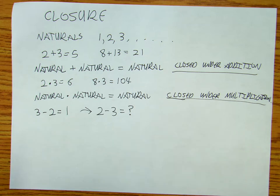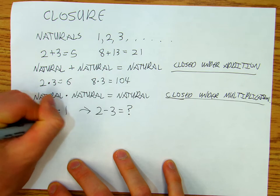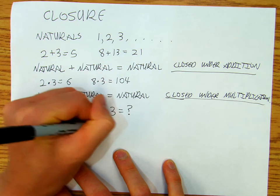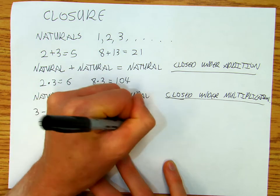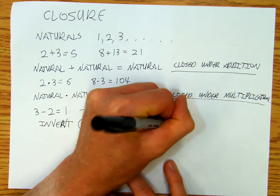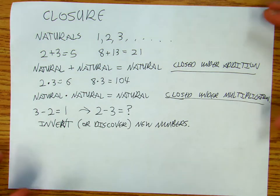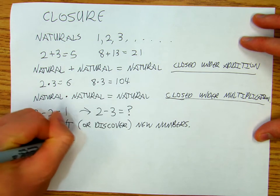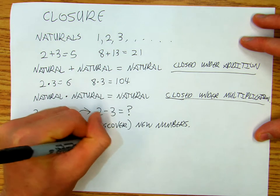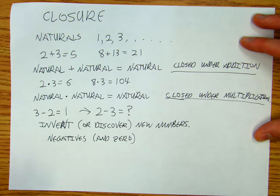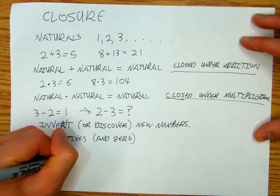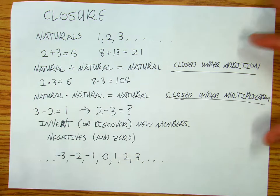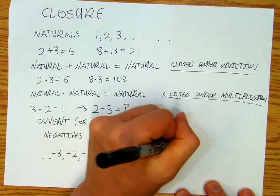So we need to invent more numbers - invent or discover, depending on how you want to think about it. In order to do this, I need to have my negatives and 0. So now I've got dot dot dot, negative 3, negative 2, negative 1, 0, 1, 2, 3, dot dot dot. And these are going to be closed.